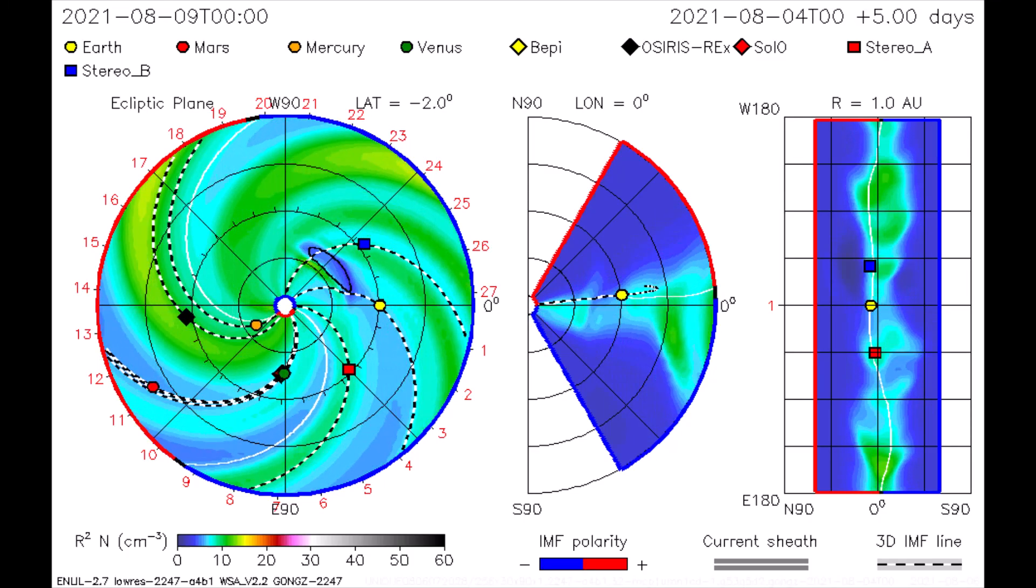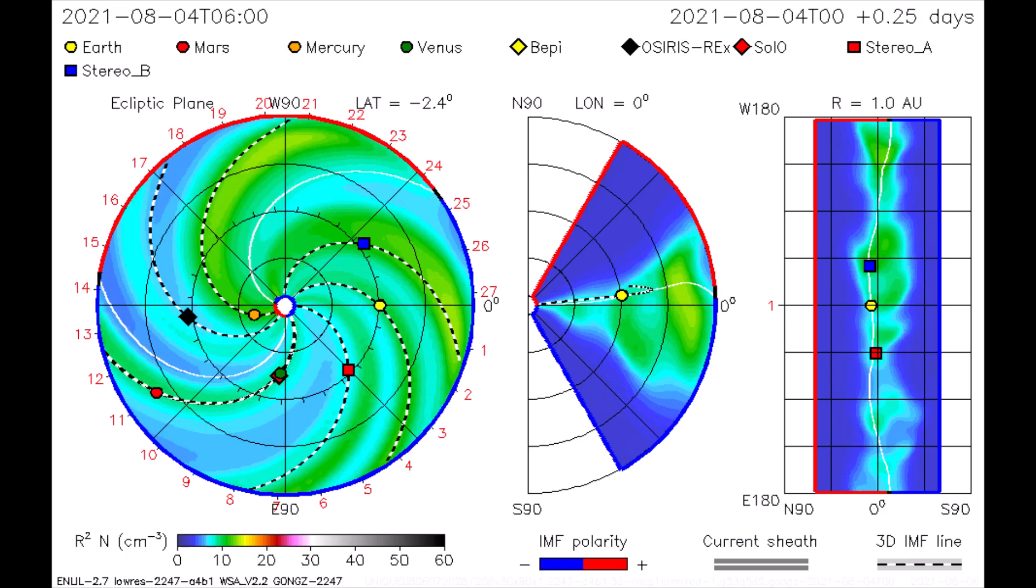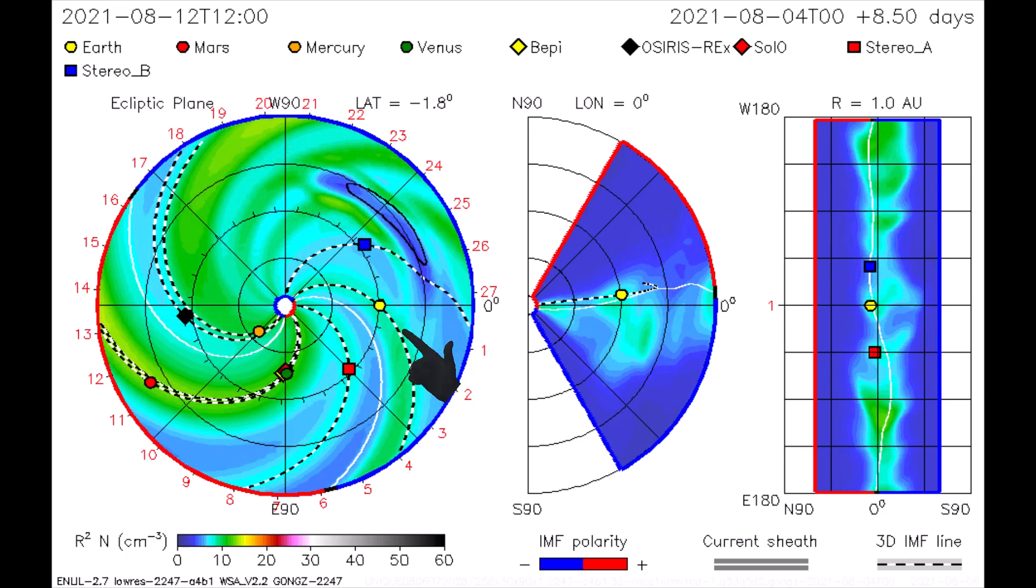On this CME model the flare is mapped, as the stereo B satellite gets a wave of solar radiation, and the Earth gets a glancing glow.